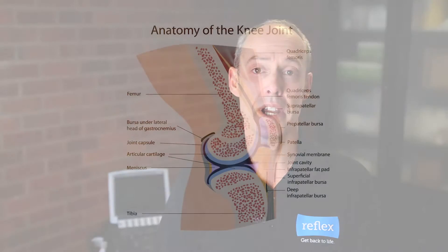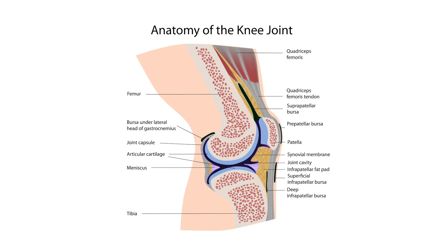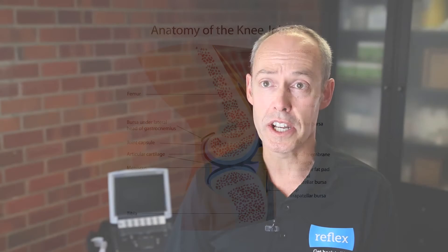The knee is the largest joint in the human body and also the most common one to fail. Its complex anatomy has several supporting ligaments and tendons along with joint stabilizers that make it possible for us to run, jump, and pivot.